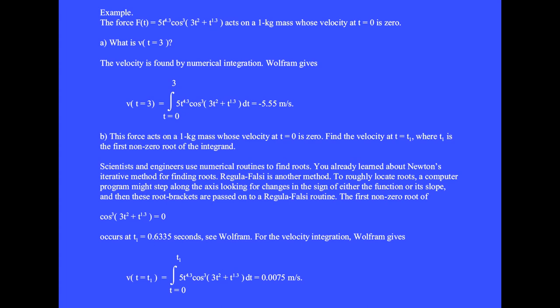Scientists and engineers use numerical routines to find roots, or zeros. You already learned about Newton's iterative method for finding roots. Regular falsi is another method. To roughly locate roots, a computer program might step along the axis looking for changes in the sign of either the function or its slope. And then these root brackets are passed on to a regular falsi routine.